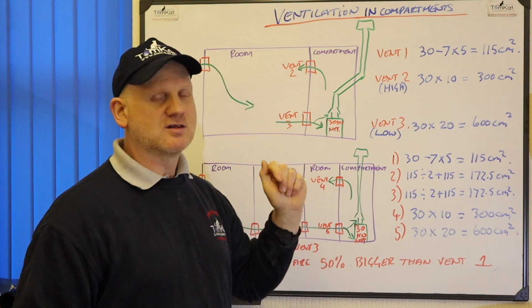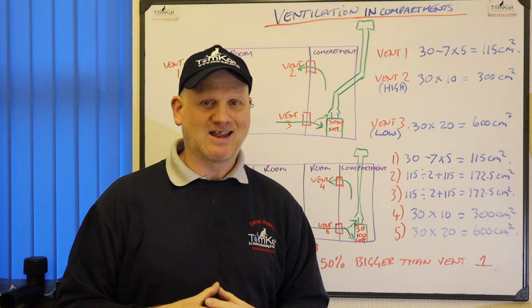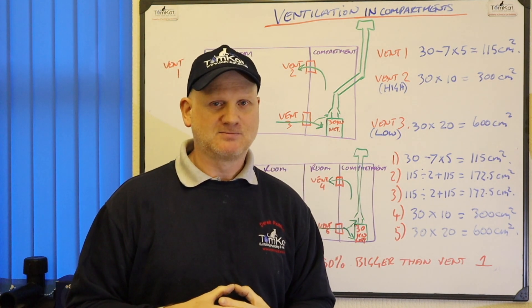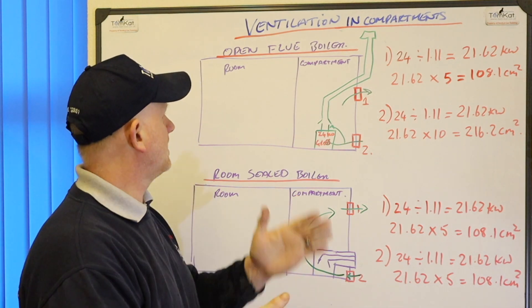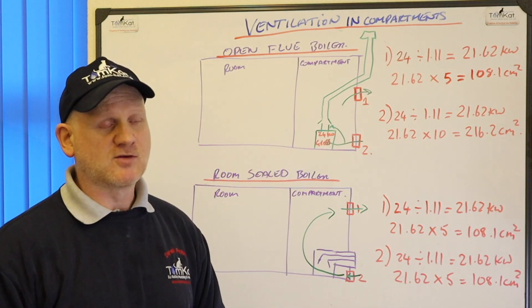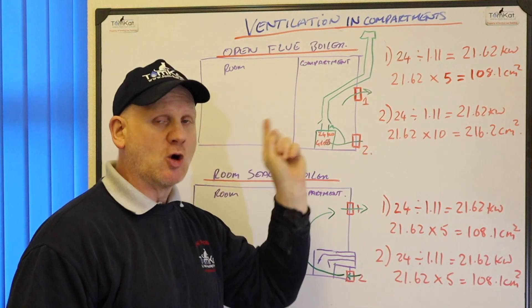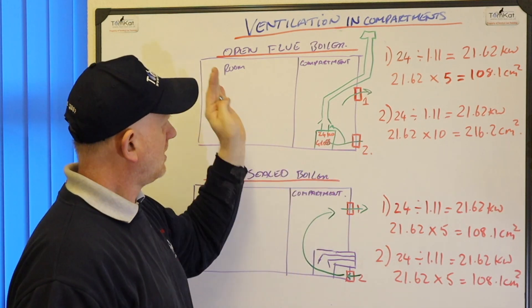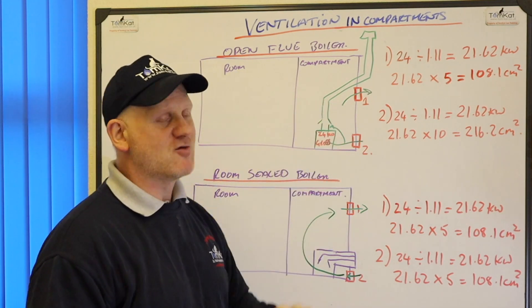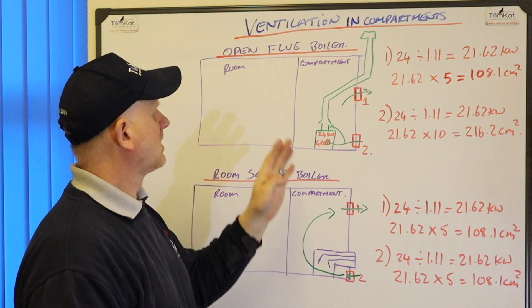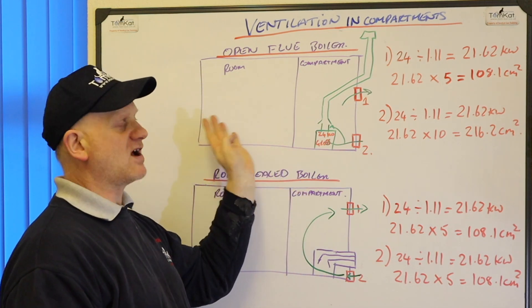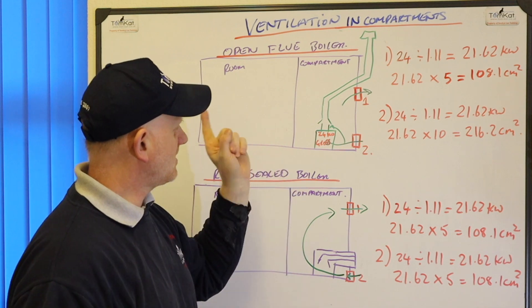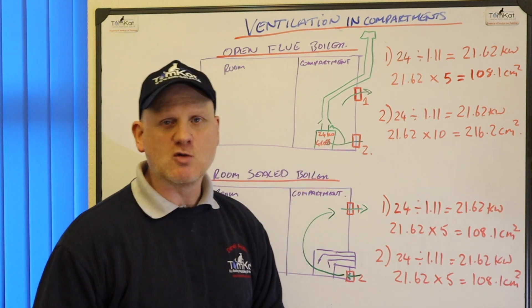So let's have a look at these two different scenarios we've got now. So this again is an open flue boiler taking its air direct from outside. So we don't need three vents, we only need two. It's a 24kW gross boiler now.